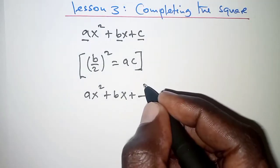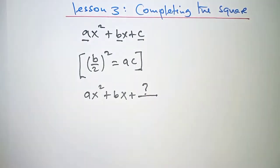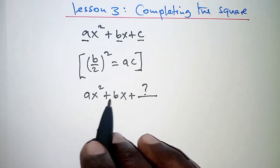the constant term, then when we find the missing term, we say we are completing the square.